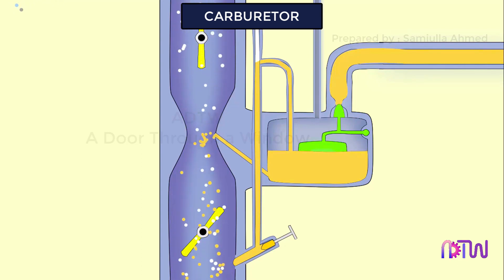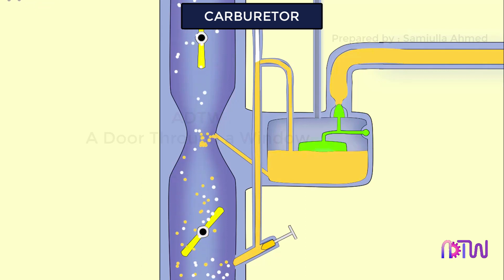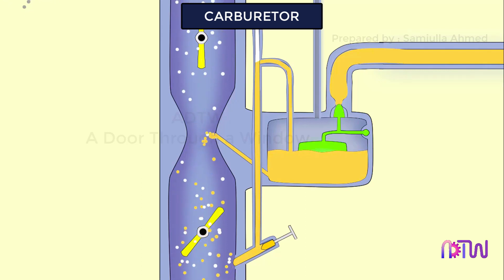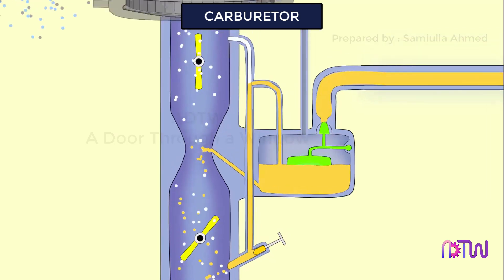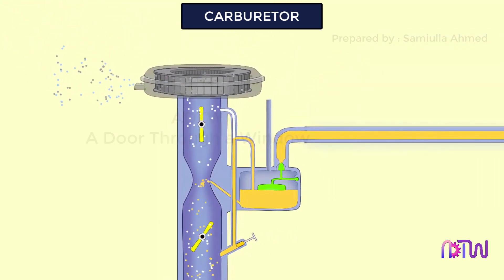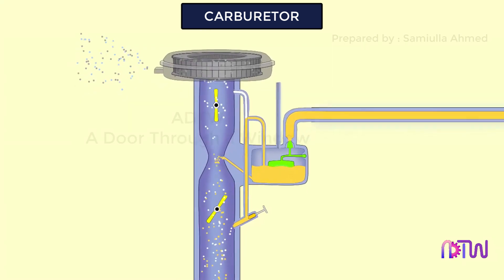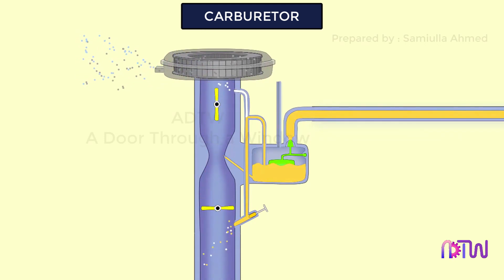The gasoline engine is quantity governed, meaning that when power output is to be varied at a particular speed, the amount of charge delivered to the engine cylinder is varied. This is achieved by means of a throttle valve, usually of butterfly type, situated after the venturi tube.